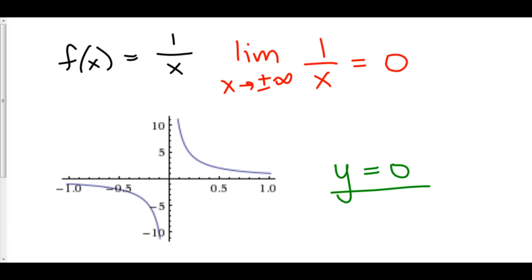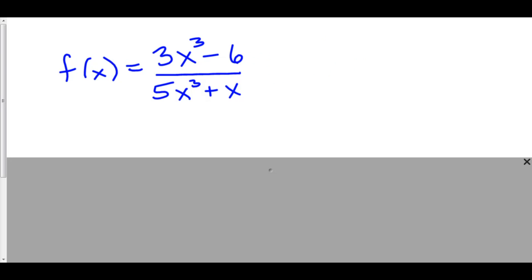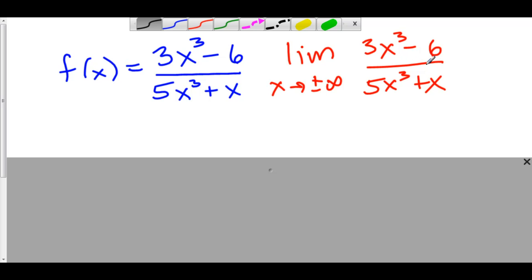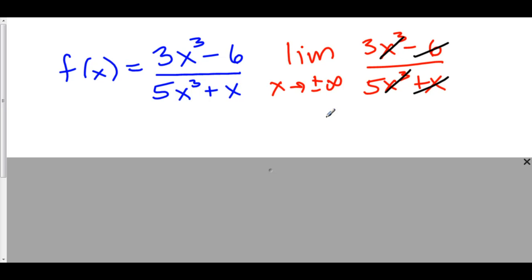Let's take a look at another example. Here we have f of x equals 3x cubed minus 6 over 5x cubed plus x. When we take the limit as x goes to both positive and negative infinity, we have 3x cubed minus 6 over 5x cubed plus x. The 6 is a grain of sand compared to the magnitude of 3x cubed, and likewise x is a grain of sand compared to 5x cubed. The x cubed over x cubed cancels out, giving us 3 over 5. It doesn't matter whether we take the limit to infinity or negative infinity — our limit is still 3 over 5. So our horizontal asymptote is y equals 3 over 5.